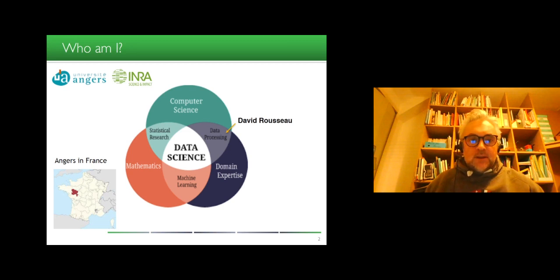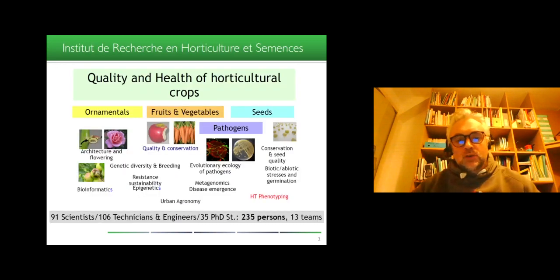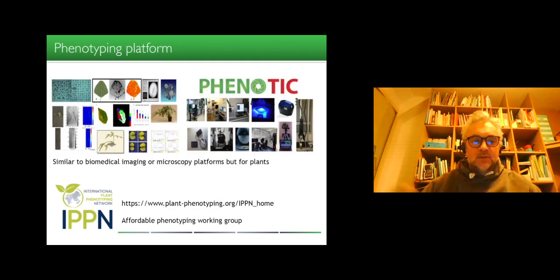In this northwest part of France, we have a lot of productions of fruits and vegetables and therefore it's not a surprise that we host a research institute focused on horticultural crops and seeds. Inside this institute, we have a high throughput phenotyping center, which is nothing but something similar to a biomedical imaging facility or a microscopy platform, but dedicated to plants. So we have similar imaging such as X-ray systems, fluorescence, thermal imaging, MRI and so on, hyperspectral.